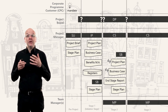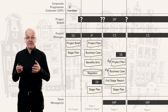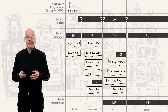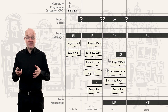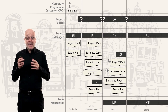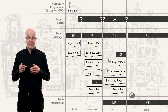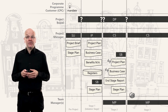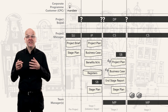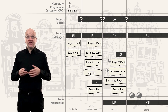Now the project manager can start the next stage and they will use the stage plan to help them — it's a plan they can use each day. They start by choosing product descriptions from the stage plan and handing these out to the teams. They discuss each work package with the team manager; a work package contains one or more product descriptions.